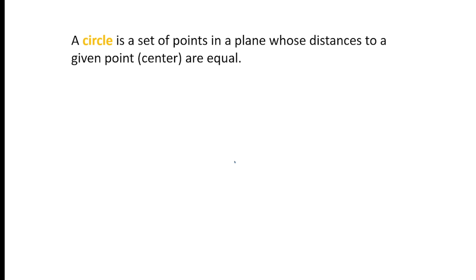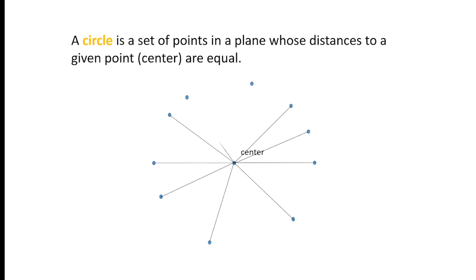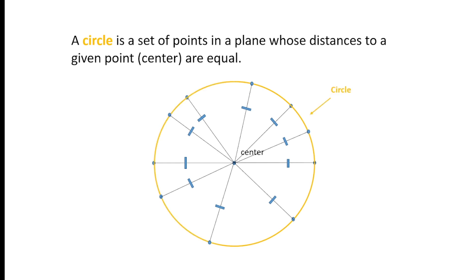Let me illustrate it this way. Assuming this is the given point or the center, and there exists a second point here, then they have a distance. Now if we add more points in a way that these points have equal distances to the center, then the curve formed is actually known as the circle. Again, the distances must be equal.